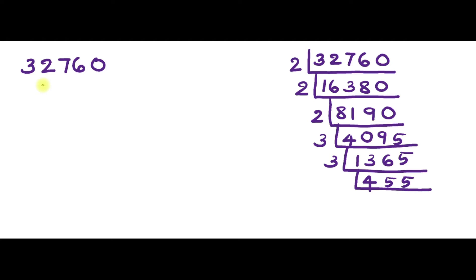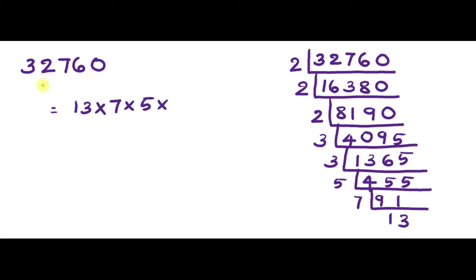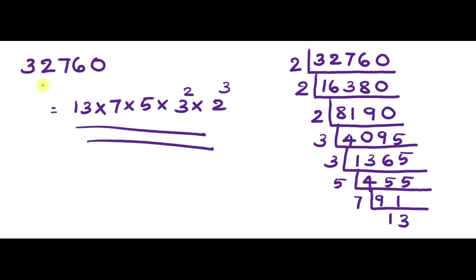455 is not divisible by 3, so we move to 5. 91 is divisible by 7, and 13 into 7 is 91. So 32760 can be expressed as 13 × 7 × 5 × 3² × 2³. This is the prime factorization of 32760.